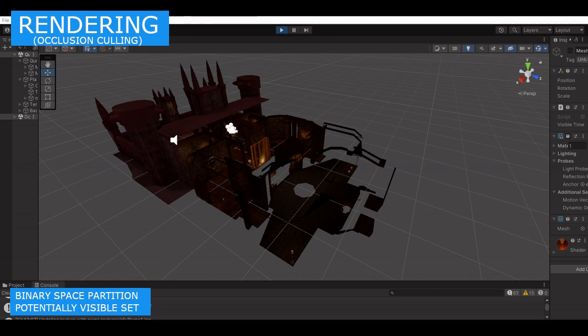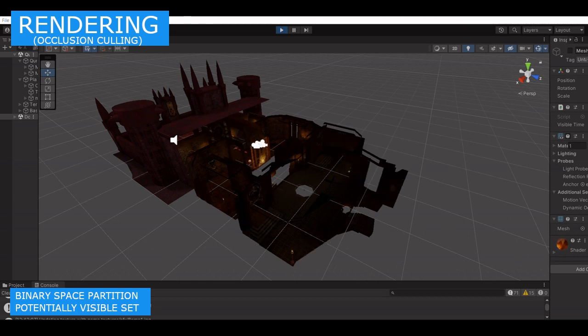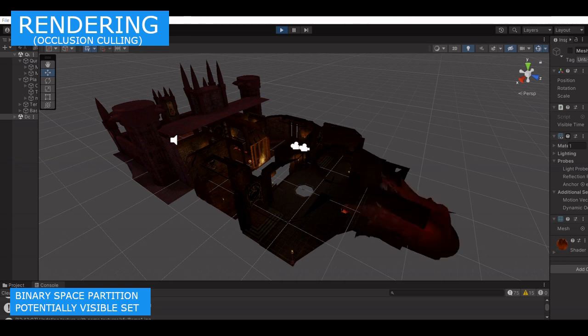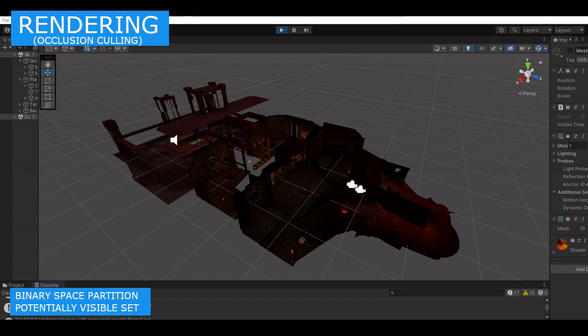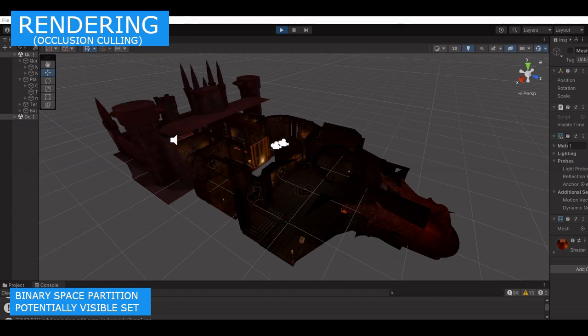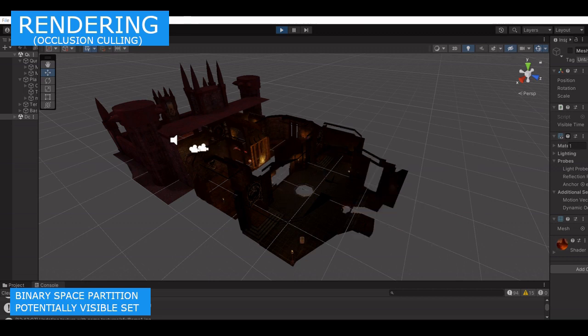We can see how the potentially visible set check works. As you can see, we are approaching the area we were before and the area starts appearing, the clusters start appearing. Basically, that's how we are handling the occlusion culling in Unity, as something that was done in Quake 3.